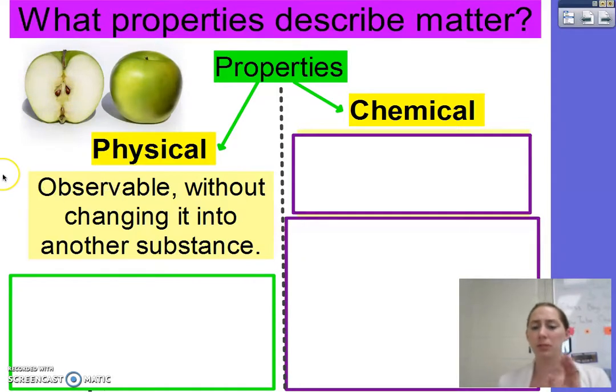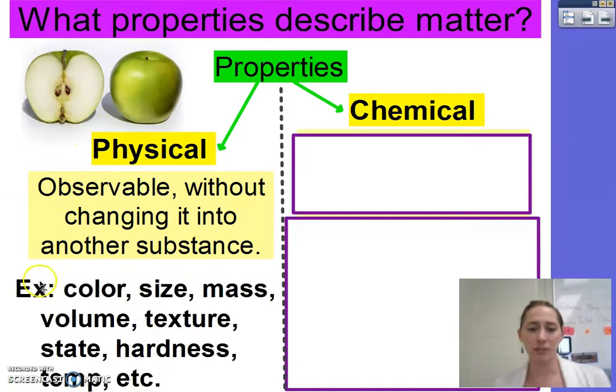So, those are all physical properties. They're things you were able to simply observe without changing the apple into some other substance. Other examples of these physical properties: we covered color, size, the mass, volume, texture, the state of matter, the solid that's got some liquids in there, hardness, temperature, anything that you can pretty much measure without changing the substance.